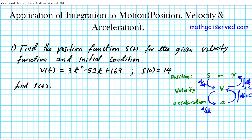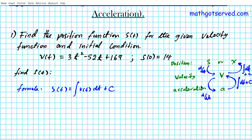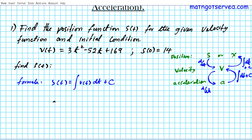To find the position function, we need the formula that's going to guide our problem solving process. Looking at SIVA, we can clearly see what the formula is. The position s of t, given v of t, means we're going from v up to s — we're going up, so we're integrating. So s of t equals the integral of v of t dt plus the constant C. We're going to input the velocity function 3t squared minus 52t plus 169 into the integrand, integrating with respect to t, and don't forget your constant of integration C.